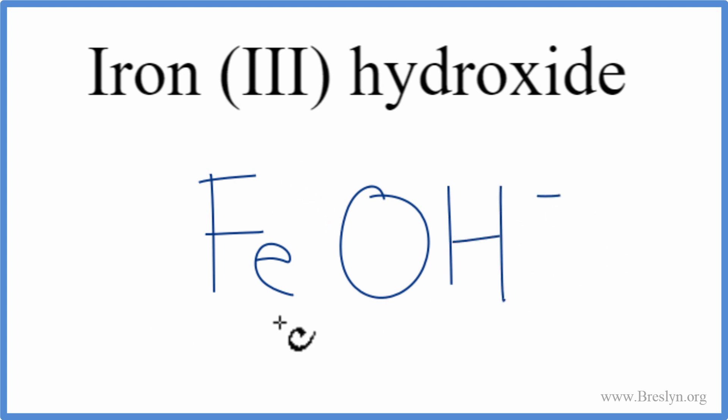So we have Fe, which is a metal, and this hydroxide, which is a group of nonmetals. This is an ionic compound, and we need to take the charges into account when we write the formula for iron (III) hydroxide.